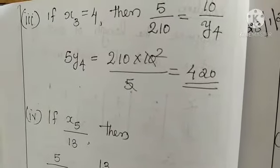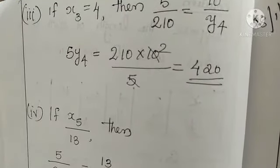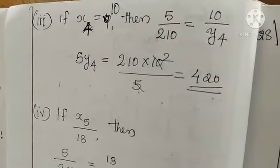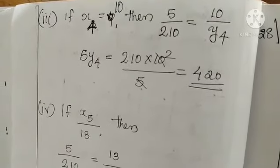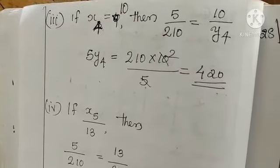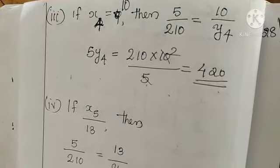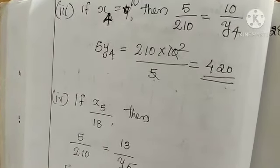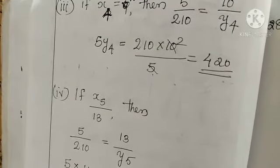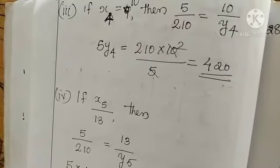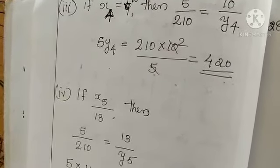Next we can calculate y4. We can calculate x4 by y4 is equal to x1 by y1. Same condition we can write. So substitute 5 by 210 is equal to x4 by y4. Cross multiply and we will get rupees 420 for 10 meters of cloth.